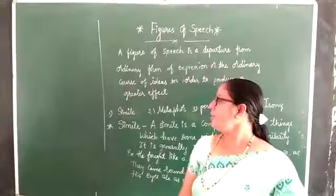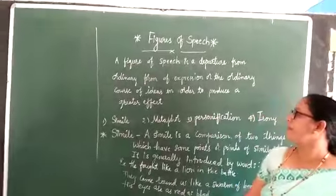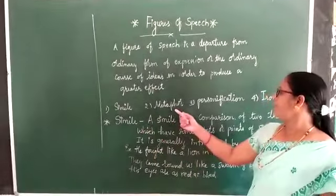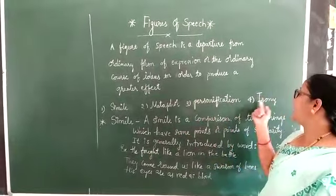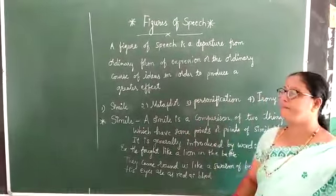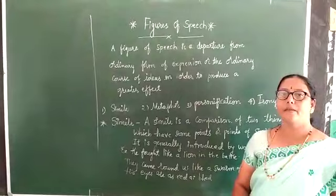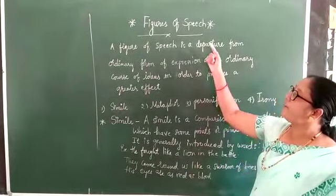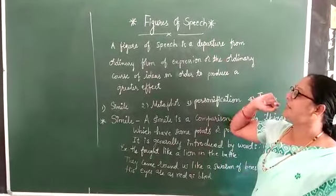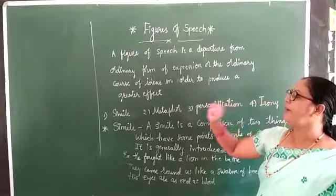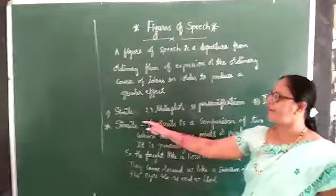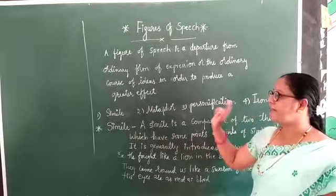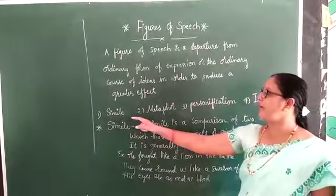In your textbook, you have seen simile, metaphor, personification, and identity. There are 8 to 9 figures of speech, but we are going to learn only the first 4 figures of speech. Among those, the first one is simile.